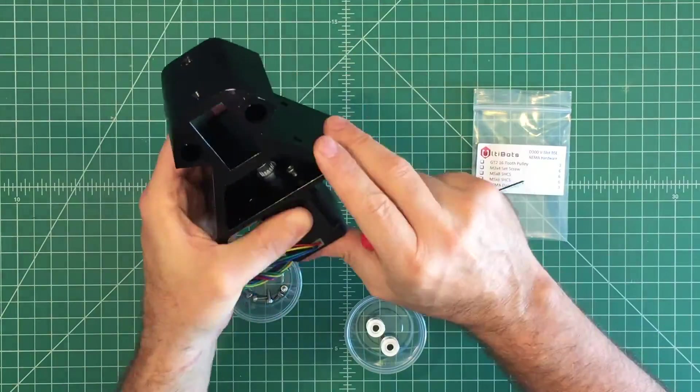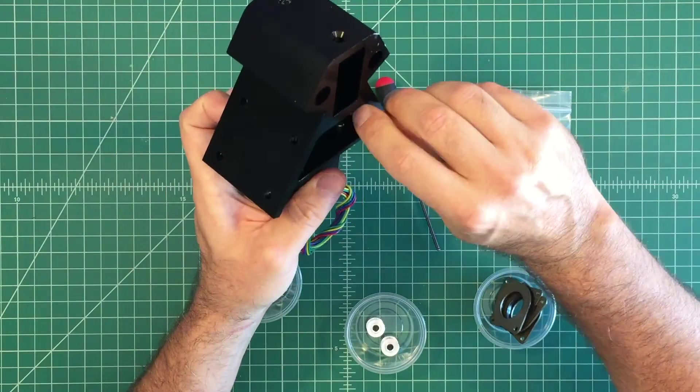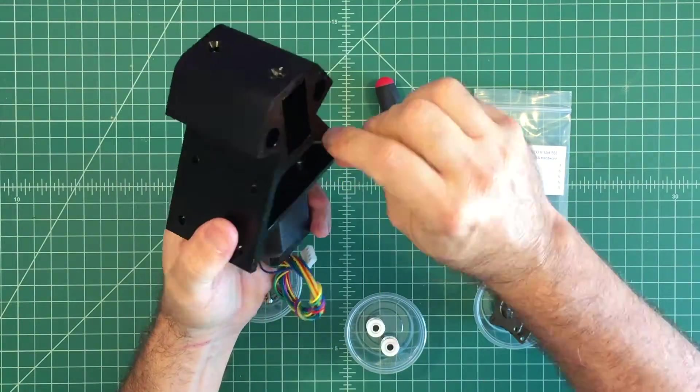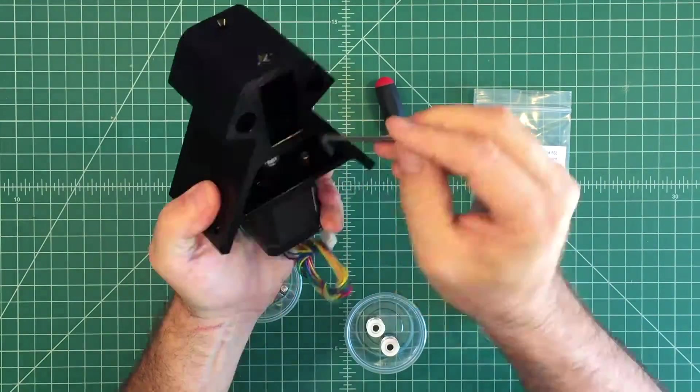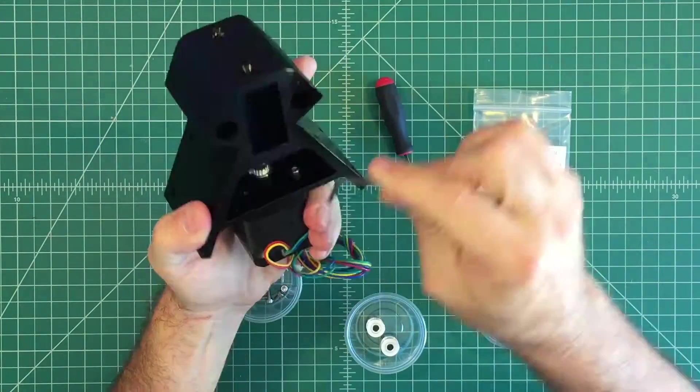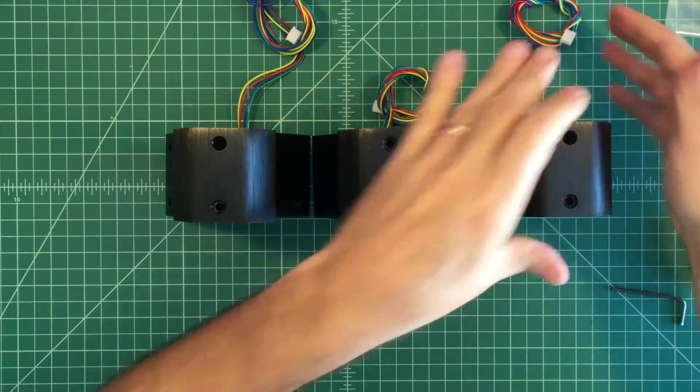Turn the motor frame assembly around and install the remaining M3 x 8 screw. Finally, tighten both screws with a 2.5 metric L key. Repeat these steps with the remaining two motor frame assemblies.